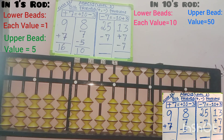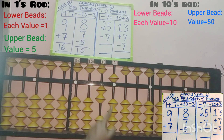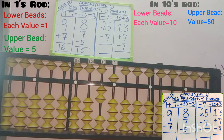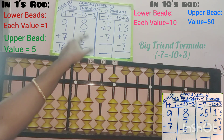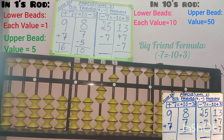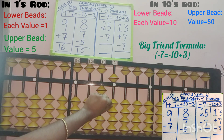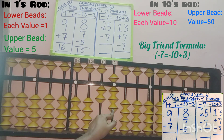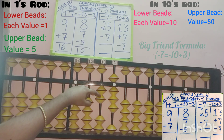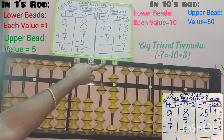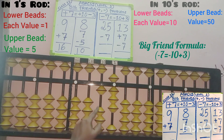Next, second row: minus 7. We need to remove 7 beads in the 1s slot since 7 is in the 1s place. Check in the 1s slot — only 5 beads are added, so we cannot remove 7 directly. Apply the big friend formula for removing 7. 7's big friend is 3, but in the question, minus symbol is there, so we have to add the friend of 7 — that is, do plus 3 in the 1s slot: 1, 2, 3. While adding the friend, remove the boss in the 10s place — minus 10. 1 bead removed from the answer point in the 10s place, so minus 10 is completed. By doing minus 10 plus 3, minus 7 has been done using the big friend concept.